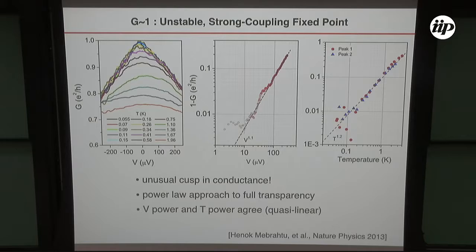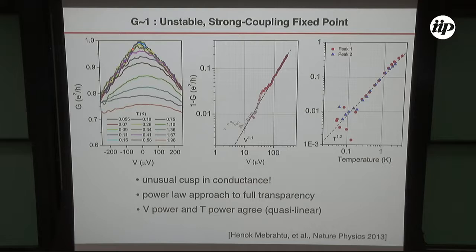Let's look at the approach to perfect conductance. Here's the conductance as a function of applied bias — so this is non-equilibrium. If you look at the differential conductance as a function of applied bias, what you normally expect to see is something flat — you're supposed to have a linear response regime. Indeed at higher temperatures you see a quadratic maximum, but as you go to low temperature you can see that it looks like you're developing a kind of cusp. If you look more carefully by plotting 1 minus G as a function of applied bias or temperature on a log-log plot, there is a power-law decay that is approximately linear. That's another piece of data that we need to explain.